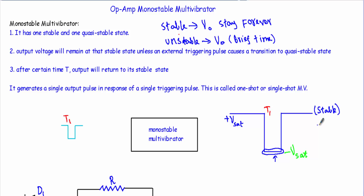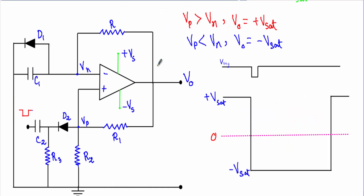It will stay at this plus Vsat level forever if I don't apply any external triggering pulse. Using a single triggering pulse I have generated only one output pulse. That's why this is known as a one-shot or single-shot multivibrator. This is the circuit structure of our operational amplifier monostable multivibrator circuit.